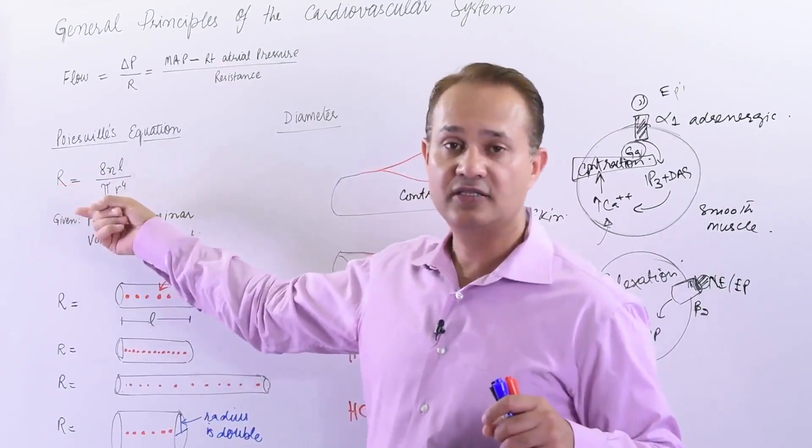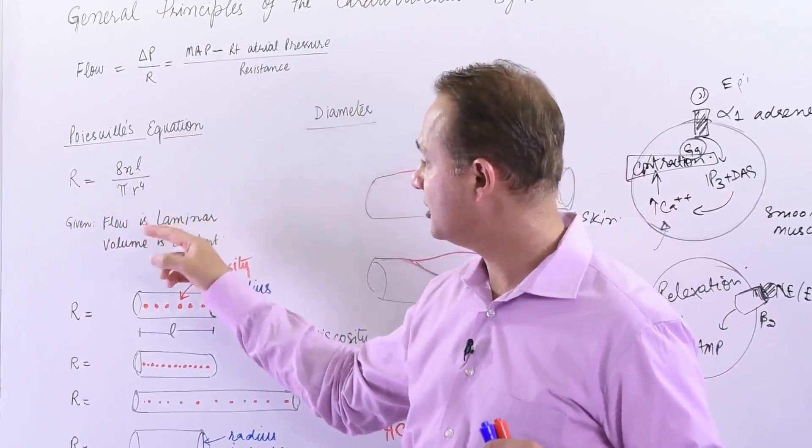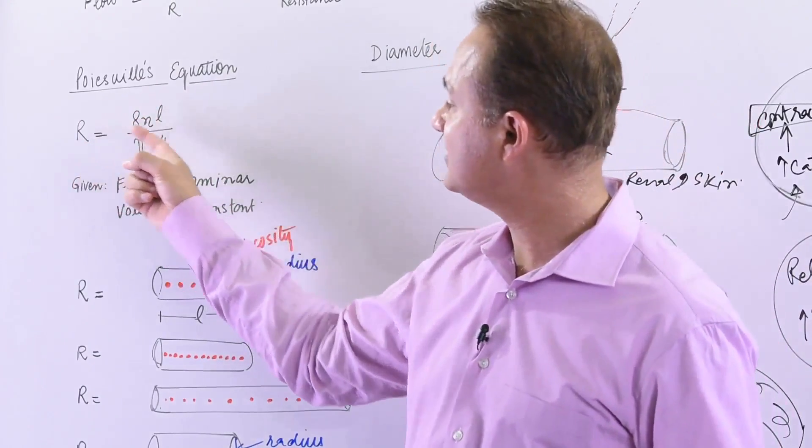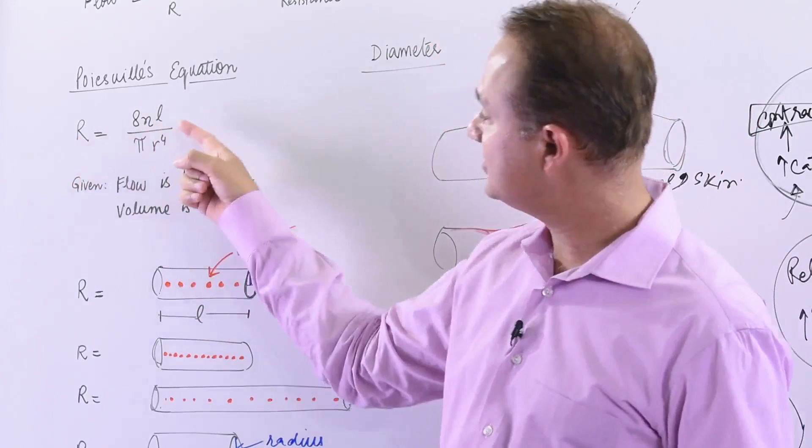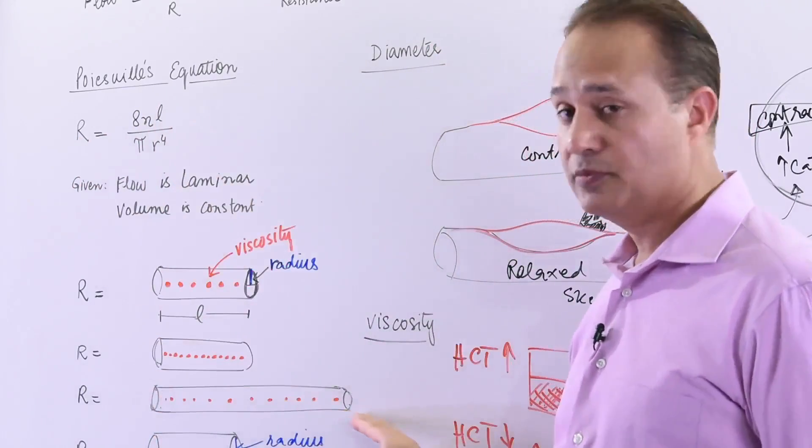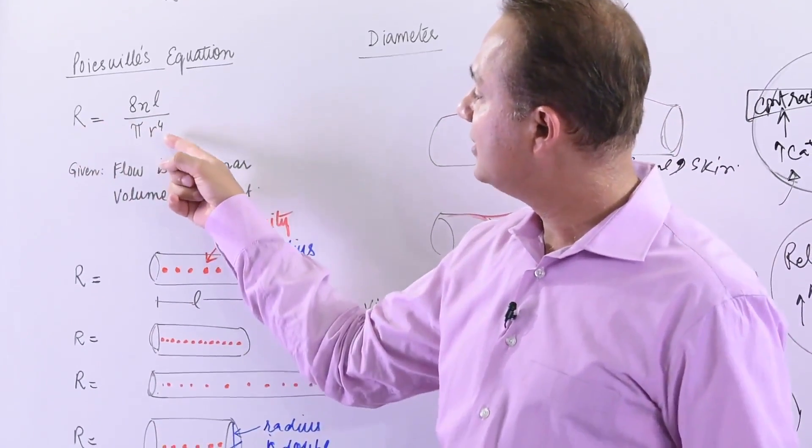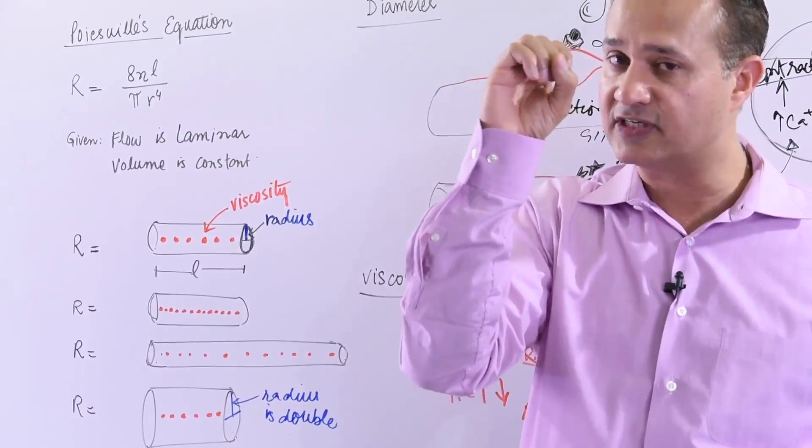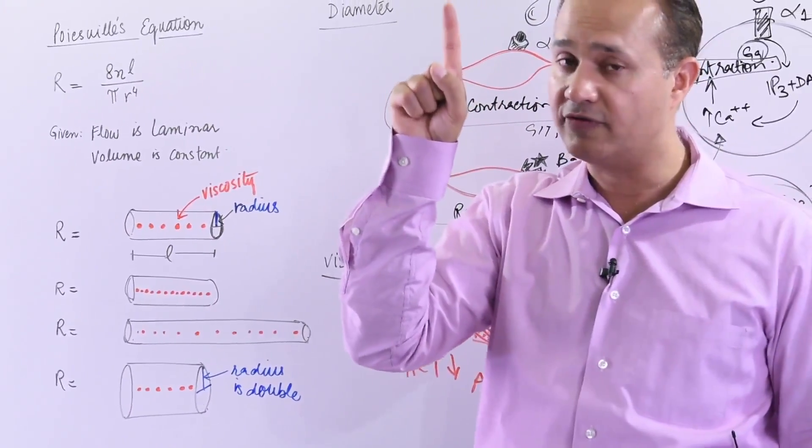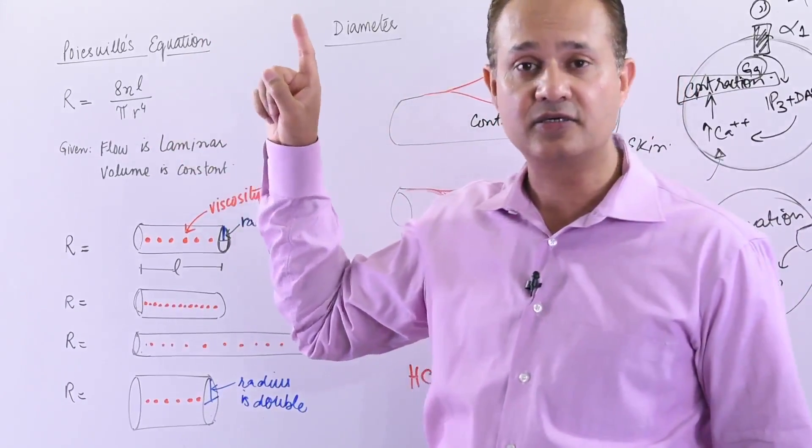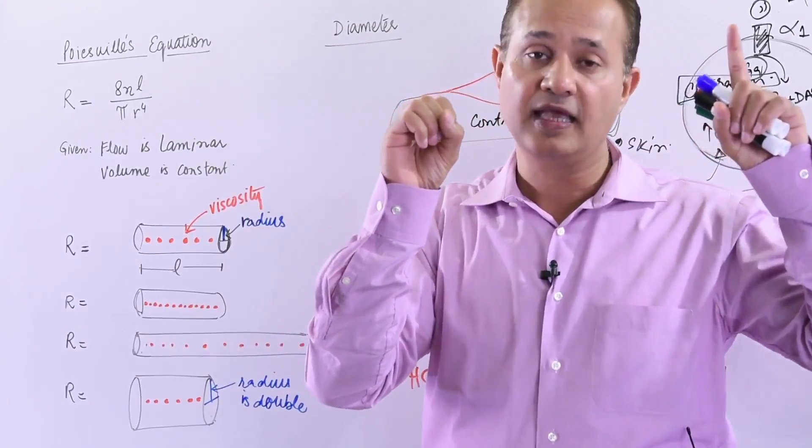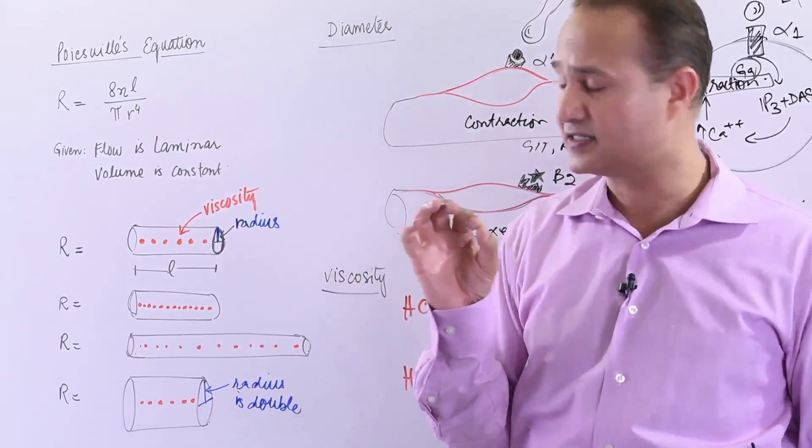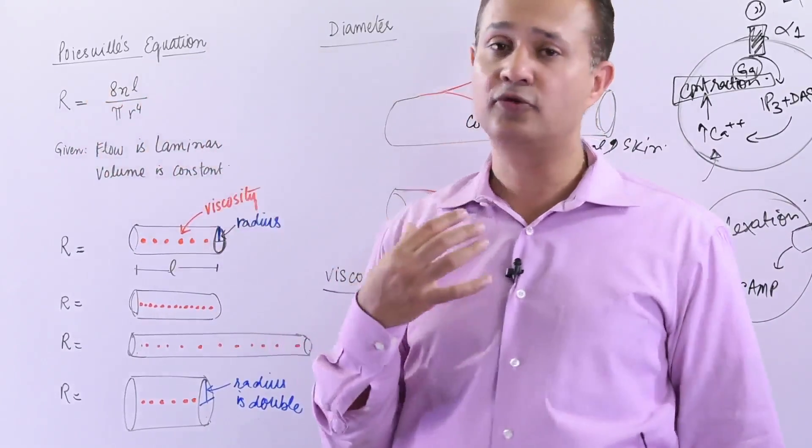The various factors that affect the resistance are, according to Poiseuille's equation, the following. Look, if you double the viscosity, then the resistance will double. That is a direct relationship. So resistance is directly proportional to the viscosity. Similarly, resistance is directly proportional to the length. So if you double the length of a tube, then the resistance will become double as well. However, resistance is inversely proportional to the fourth power of the radius. That means if you halve the radius, if you reduce the radius of a vessel to half, you have to make fourth power of it. That would mean resistance would increase. Reducing the diameter would increase the resistance by 16 times. And if you double the diameter, then the resistance would reduce by 16 times.